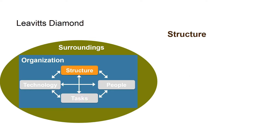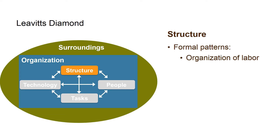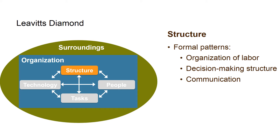Structure is the formal patterns, such as the organization of labor and decision-making structure — for example, what the COO must decide versus the CFO. How are communication patterns arranged? Are you allowed to see all documents, or are there restrictions in relation to the position you possess?